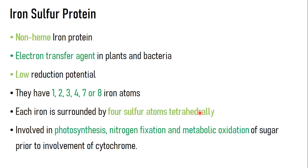Iron-sulfur proteins are non-heme iron proteins. Heme contains iron as the metal surrounded by a porphyrin part with various substituents, but this arrangement is not present in iron-sulfur proteins — that is why they are called non-heme iron proteins. Their main function is to transfer electrons. Electron transfer agents are present in our body, and this type is found in plants and bacteria.